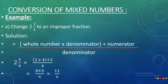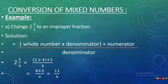Or simply, just multiply the denominator by the whole number — 4 twos are 8 — and add the result with the numerator: 8 plus 3 becomes 11. So our answer is 11 by 4. In this way we will get our answer directly.